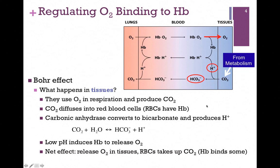Within the red blood cell, we have the enzyme carbonic anhydrase, which readily converts CO2 to bicarbonate and H-plus — circled in red here. So within the red blood cell, we are converting CO2 to bicarbonate and H-plus. As we increase the H-plus concentration — that is, lower the pH — it induces hemoglobin to release more oxygen, which is exactly what we hope to accomplish in tissues.